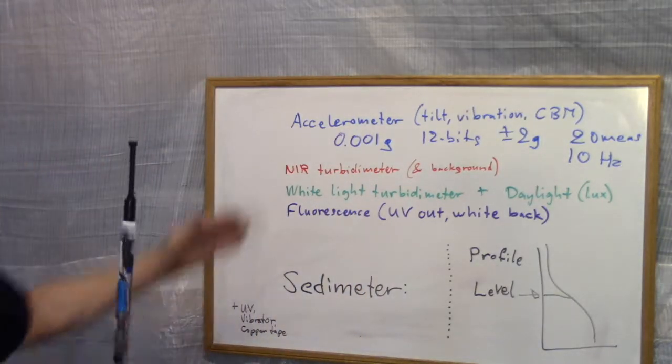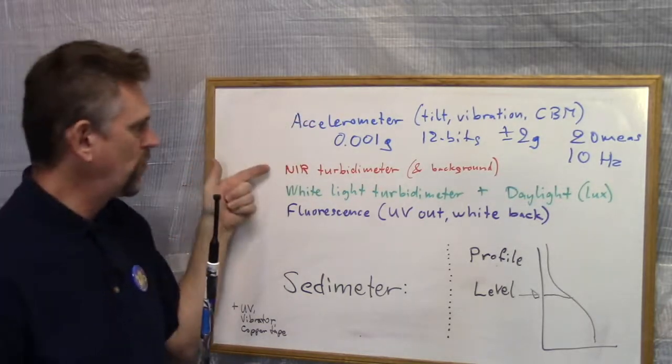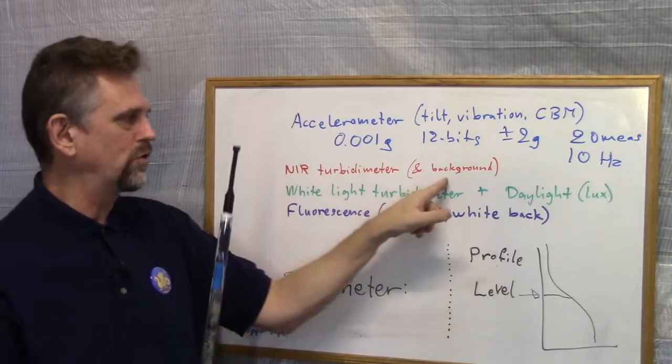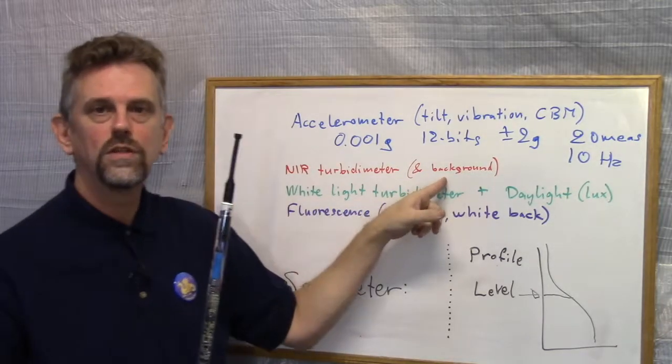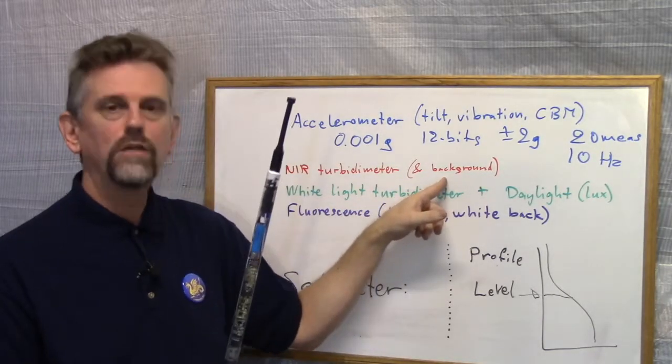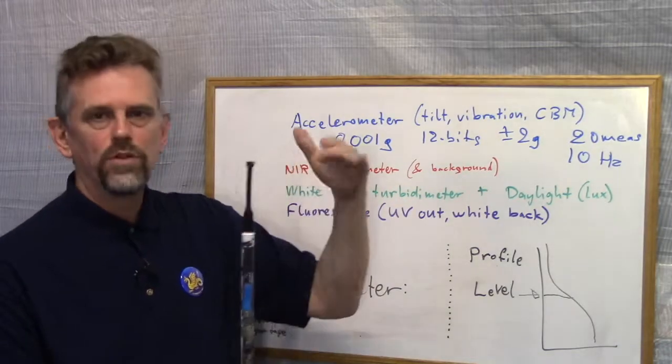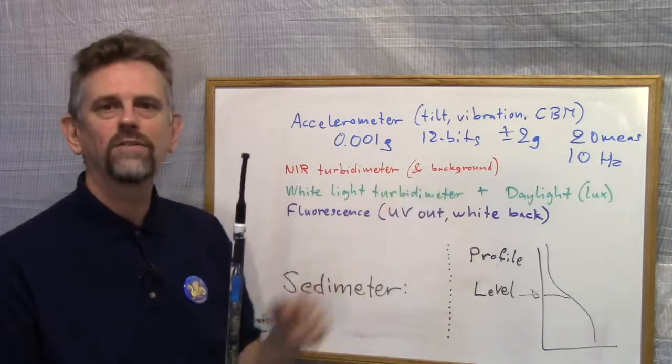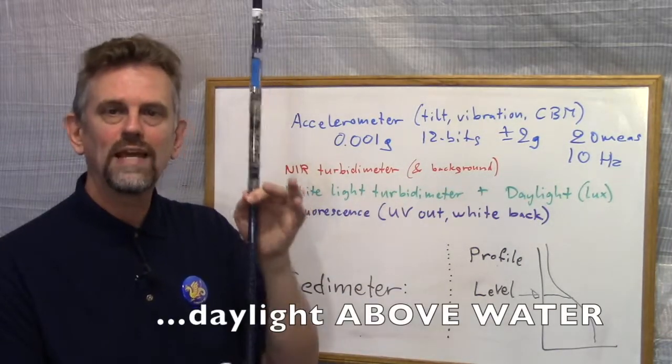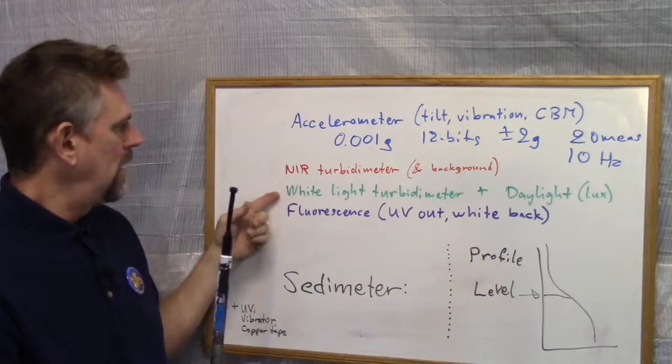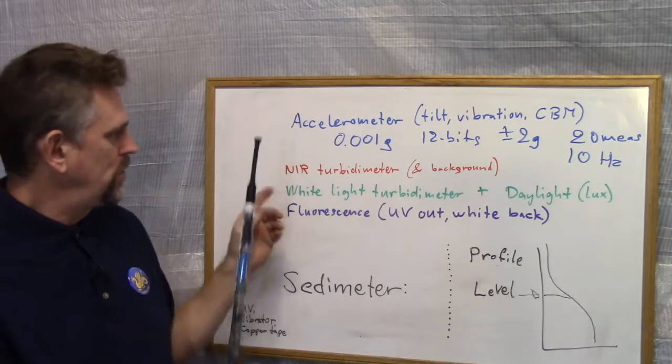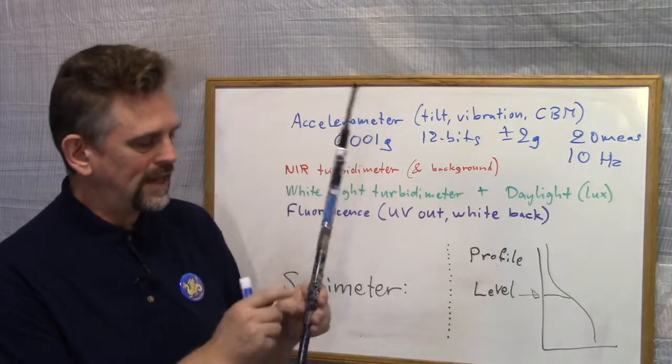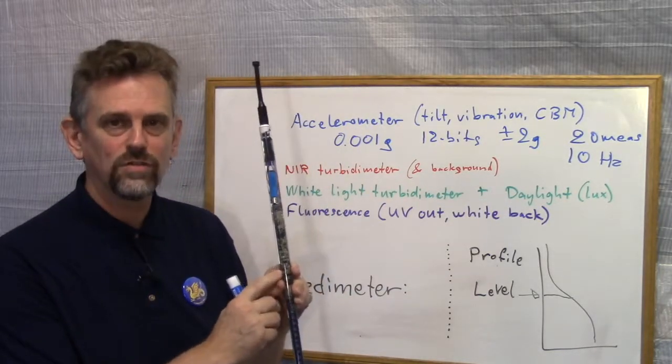All right, so I mentioned here already the isoturbidometer, the near-infrared. It also records the background near-infrared light. Once you're underwater by more than a foot or so, there should be no background light. So if there is a background near infrared, it pretty much means it's been exposed to daylight. And the white turbidometer, which is the EPA style, will also measure the daylight, the daylight sensor here. Light sensor measures the daylight.